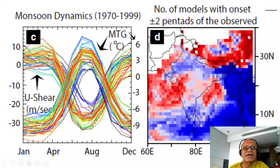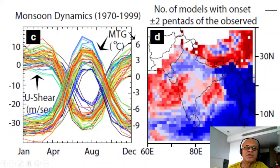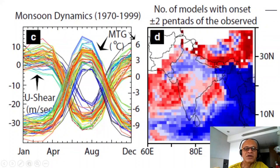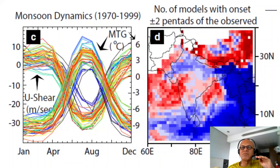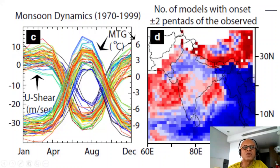This is something called monsoon dynamics, where the tropospheric temperature gradient from the ocean to the land matters for monsoon dynamics. It's positive in the beginning of the year, switches when the monsoon onset happens, and then goes back to being positive during the withdrawal. The model range is quite large, corresponding to this large range in precipitation. This is called the vertical shear — easterly shear is critical for the strength of the monsoon, but it's also important for the propagation of northward propagating systems, what we call monsoon intraseasonal oscillations, which are related to active and break periods and monsoon depressions, and they also have a large range.